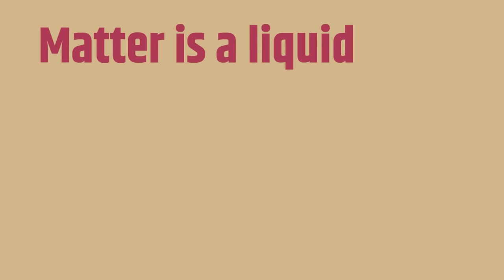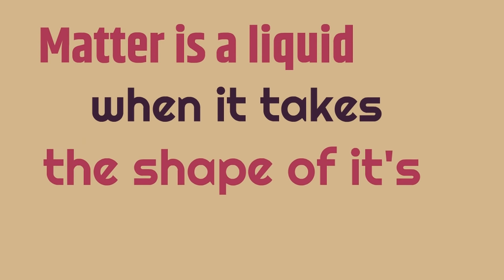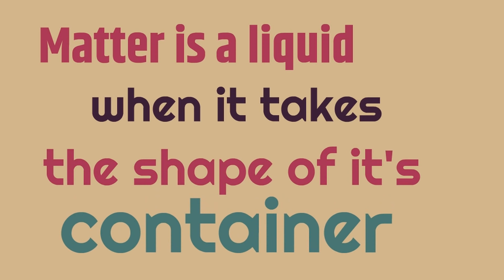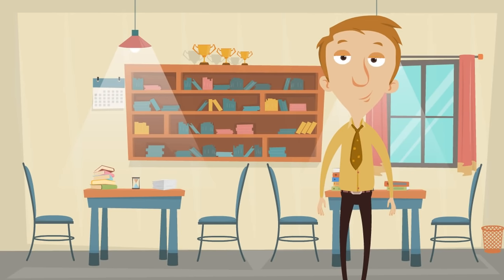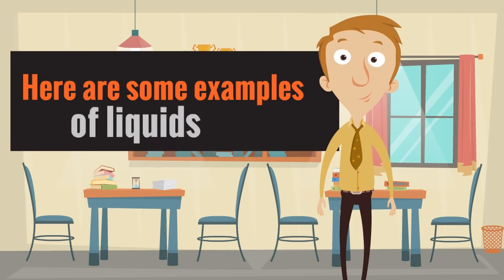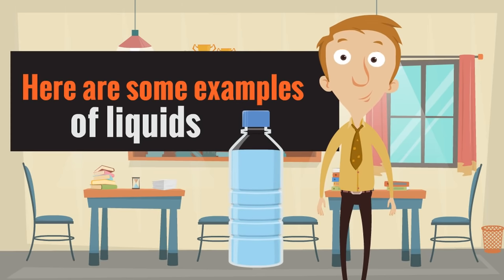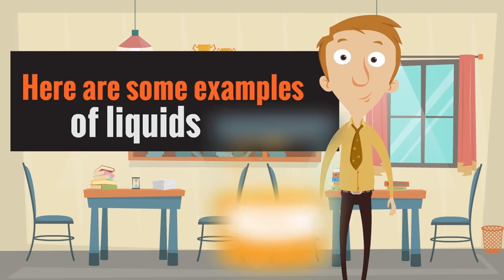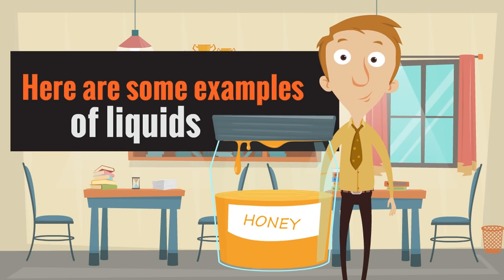Matter is a liquid when it takes the shape of its container. Here are some examples of liquids. Our first is water. Notice how we had to have it in a bottle in this picture because it doesn't have its own shape — it takes the shape of its container because water is a liquid. Here's another liquid: honey. Honey takes the shape of its container. Matter is a liquid when it takes the shape of its container. It's a liquid.